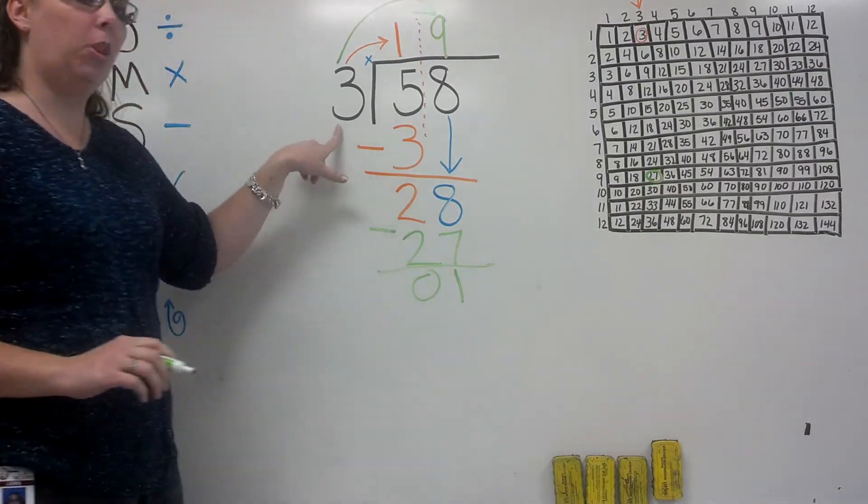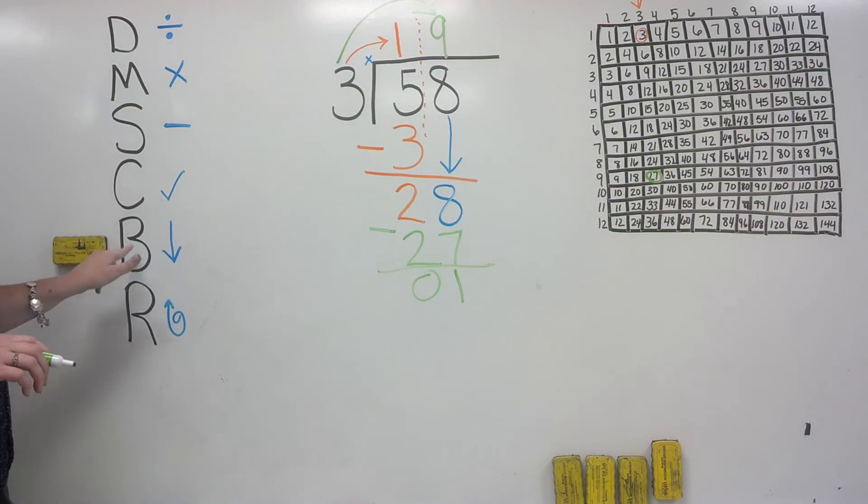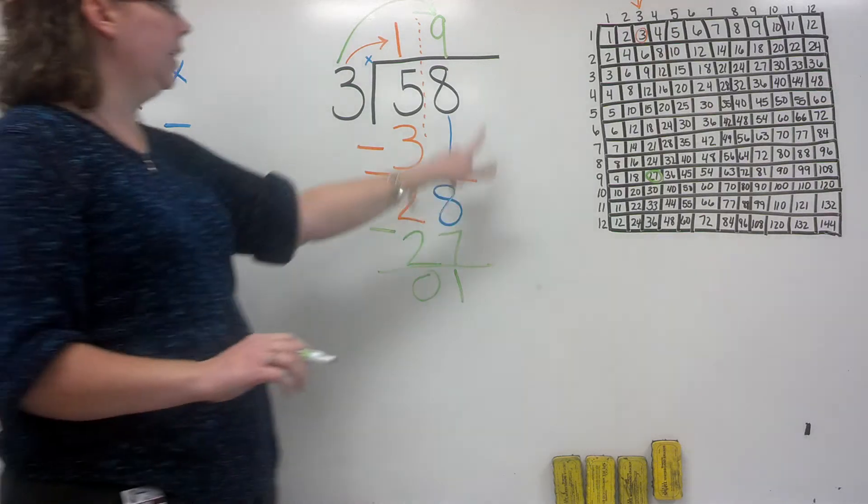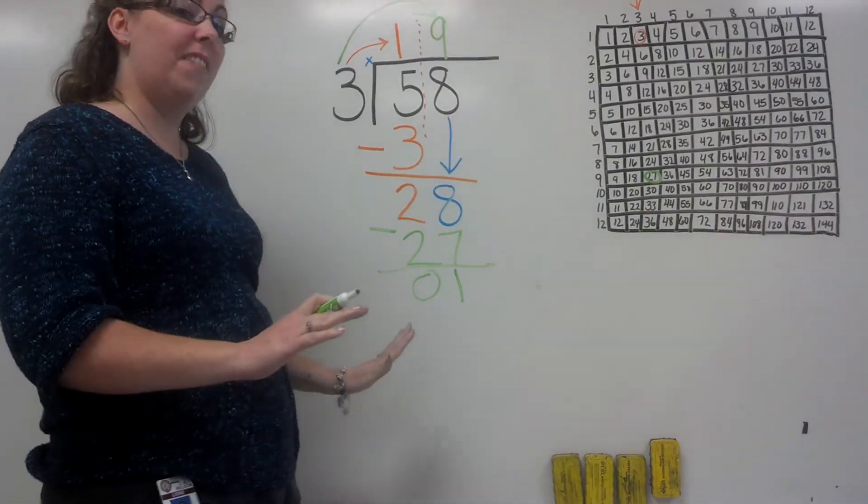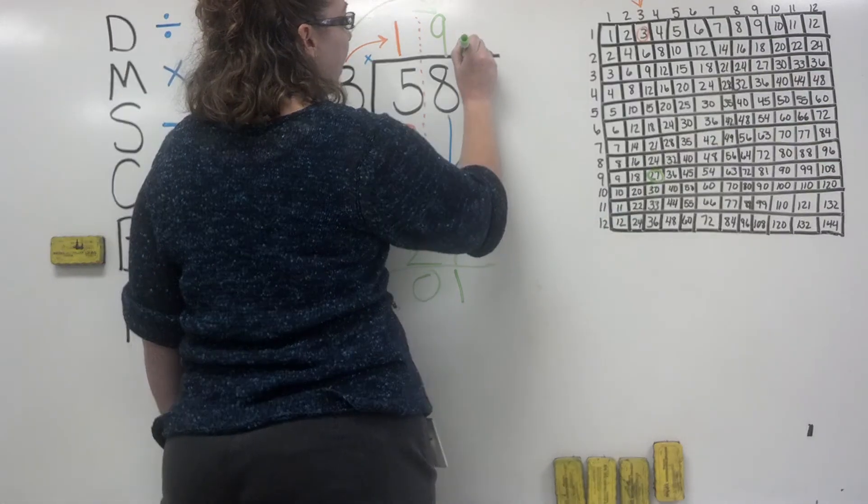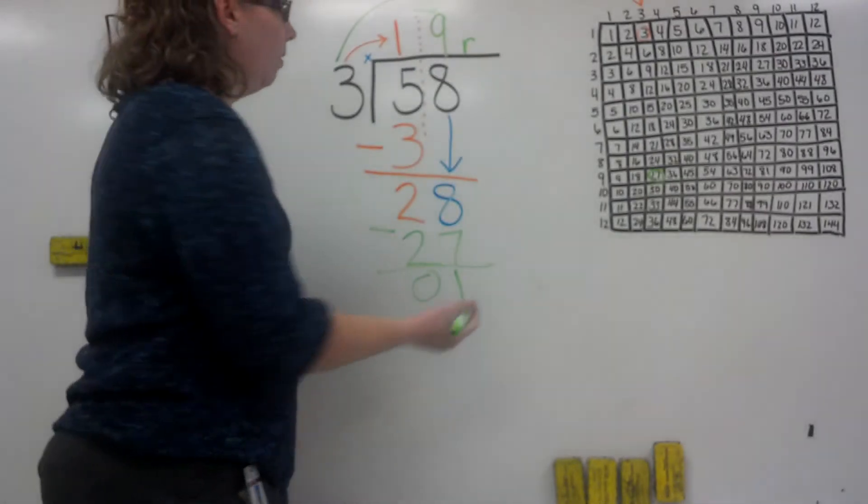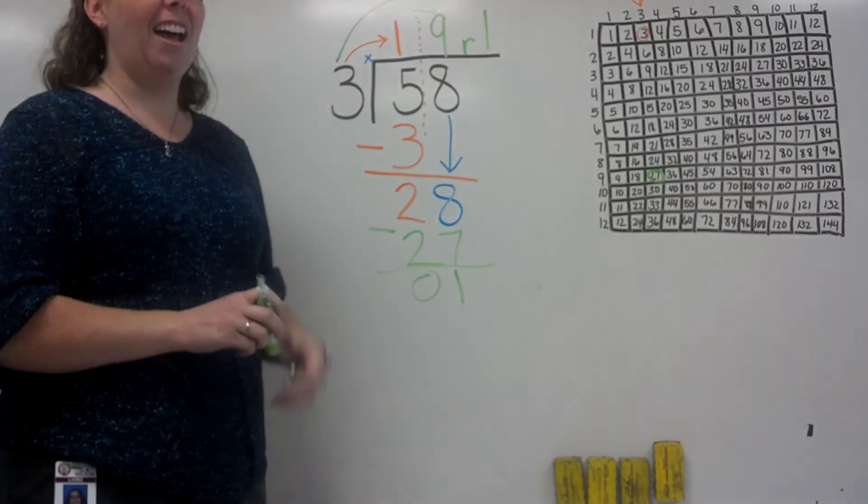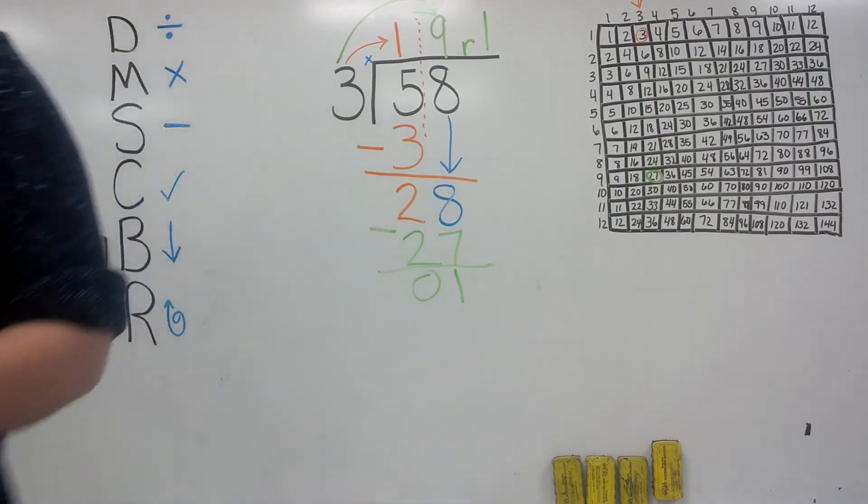Let's go to our next step: bring down. Do we have anything left to bring down? Nope, so that means we are finished. When we have this 1 here, we're going to bring it up here and write R, which means remainder, because that's what's left over. We're going to write our 1. That is how you do long division using your multiplication chart.